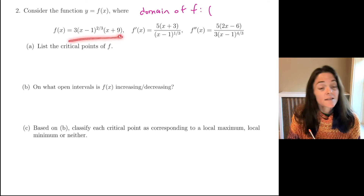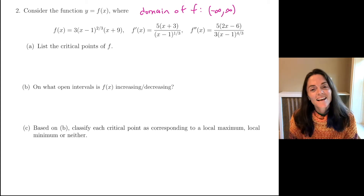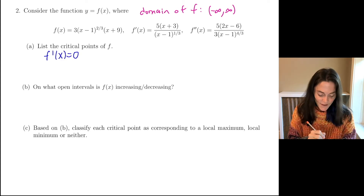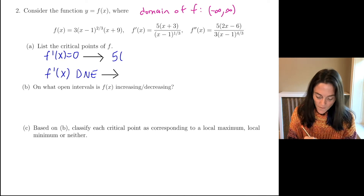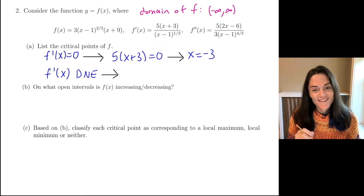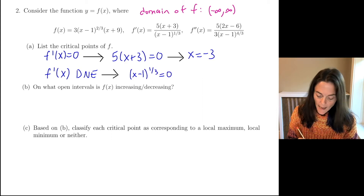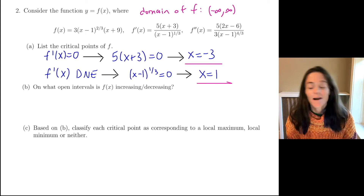This is defined everywhere — minus infinity to infinity. Now we can begin. We want to list the critical points of f. These are places where the first derivative is zero or does not exist. The first derivative is handed to us as a fraction. A fraction is generally zero only when the numerator is zero, so this would be 5x plus 3 equals 0, and we get x equals negative 3. Second, this fraction does not exist when the denominator is zero, so this would be when (x minus 1) to the 1/3 power equals 0, which happens when x equals 1. So I have two critical points.